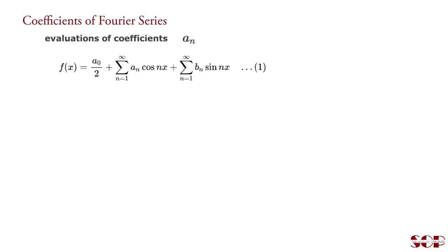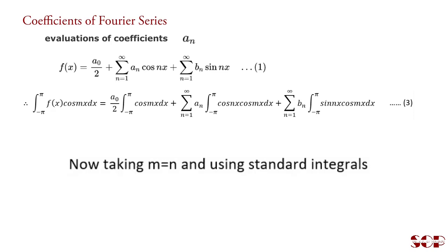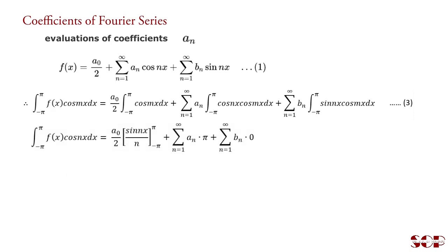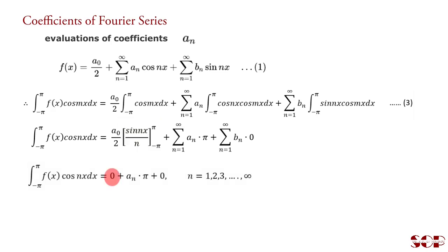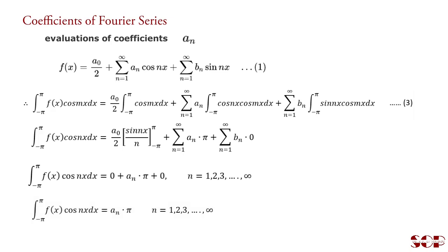For evaluation of Fourier coefficient aₙ, multiply the entire series by cos(mx) and then integrate it from minus pi to pi with respect to x. Taking m equal to n and using standard integrals: the integration involving cos(mx) converts to sin(nx)/n and ultimately becomes 0. The relevant standard integral equals pi, and another standard integral equals 0. Hence the final equation is obtained for n equal to 1, 2, 3, and so on, giving us the formula for Fourier coefficient aₙ.